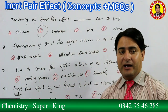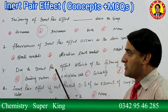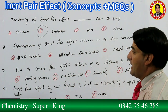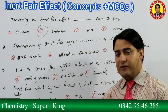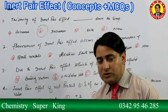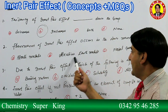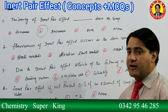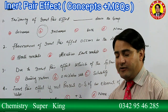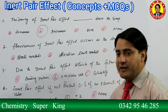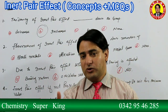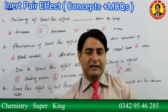Now let's solve some MCQs. The Inert Pair Effect phenomenon occurs in the lower members of which groups? The options are: alkali metals, alkaline earth metals, or noble gases. Remember: there is no Inert Pair Effect in alkali metals, no Inert Pair Effect in alkaline earth metals, and no Inert Pair Effect in noble gases.